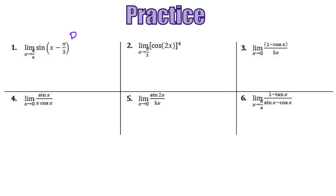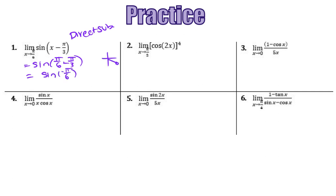Number 1 we can solve with direct substitution. If I plug in pi over 6, I get sine of pi over 6 minus pi over 3, which is the same as sine of negative pi over 6. The y-coordinate of that point is negative 1 half. So the limit as x approaches pi over 6 of sine of x minus pi over 3 is equal to negative 1 half.